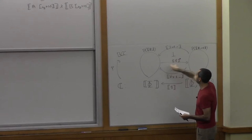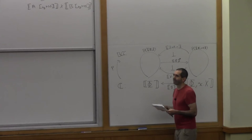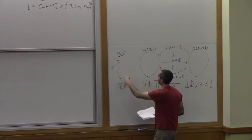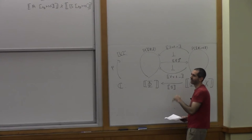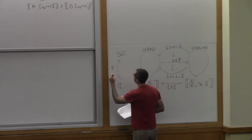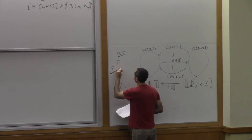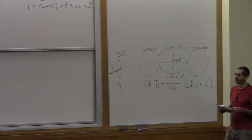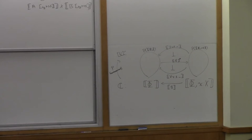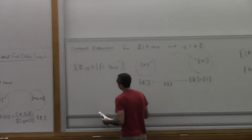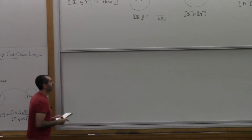Here's the picture for quantifiers. In the base category, interpreting our term language, we have the interpretation of some typing context. We also have the interpretation of the extended typing context, extended by a new variable — which is just the product. Here we have the interpretation of the single omission, which is just the projection. This gives rise to fibers: P of the interpretation of Phi, and P of the interpretation of the extended context.